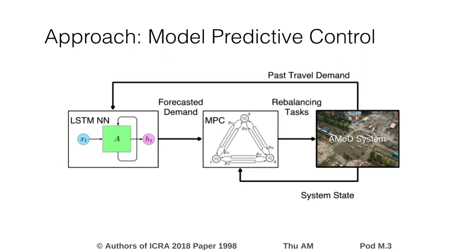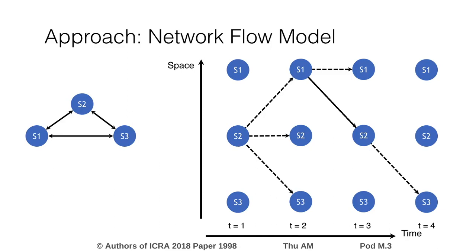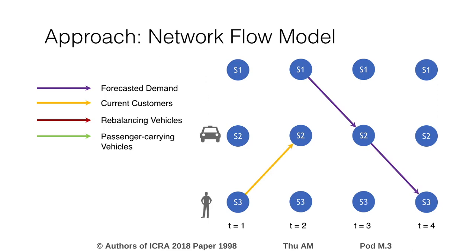Allow me to briefly describe the network flow model. We model the urban environment as a time-expanded network. In this diagram, you can see on the left a simplistic urban representation. On the right, the vertical axis represents space and the horizontal one discretizes time. The length of the edges shown represents the travel times between the regions. From the forecasting model and the observed state, we get a series of expected customer trips, outstanding customers, and available vehicles in different regions.